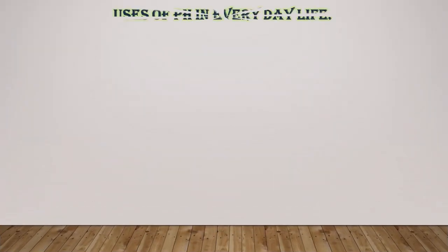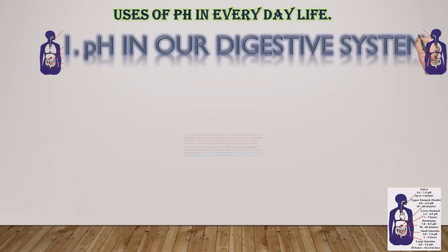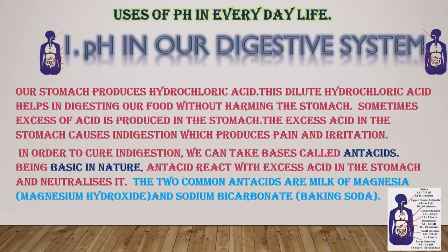Usage of pH in everyday life — pH in our digestive system. Our stomach produces hydrochloric acid. This dilute hydrochloric acid helps in digesting our food without harming the stomach. Sometimes excess acid is produced in the stomach, causing indigestion which produces pain and irritation. In order to cure indigestion, we can take bases called antacids. Being basic in nature, they react with the excess acid in the stomach and neutralize it. Two common antacids are milk of magnesia (magnesium hydroxide) and sodium bicarbonate (baking soda).